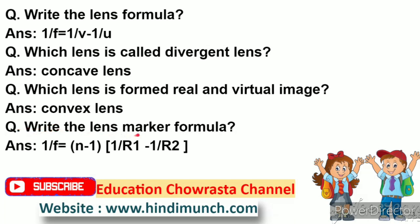Next question: write the lens maker's formula. The answer is: 1 by f is equals to (n minus 1) into (1 by R1 minus 1 by R2). Here, f is the focal point, n is the refractive index, R1 is the radius of curvature of the first surface, and R2 is the radius of curvature of the second surface.